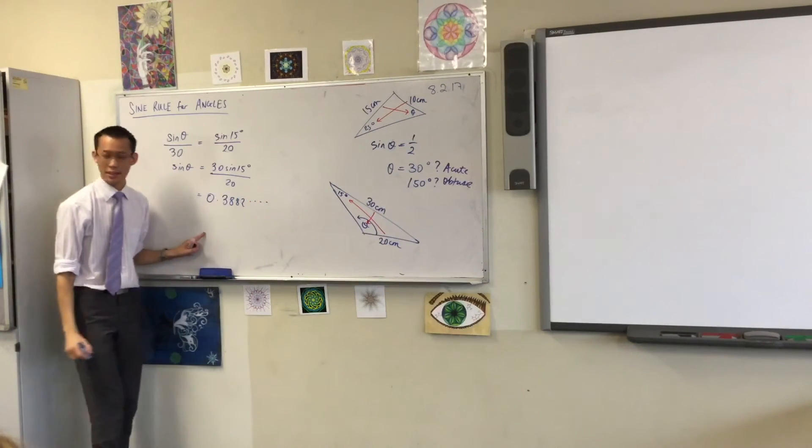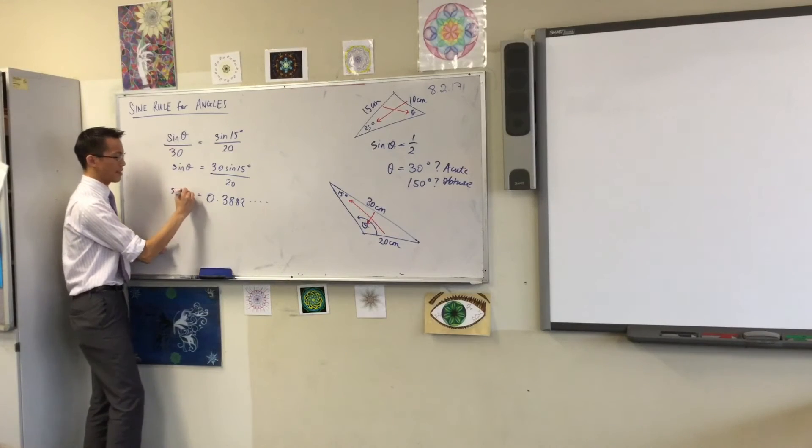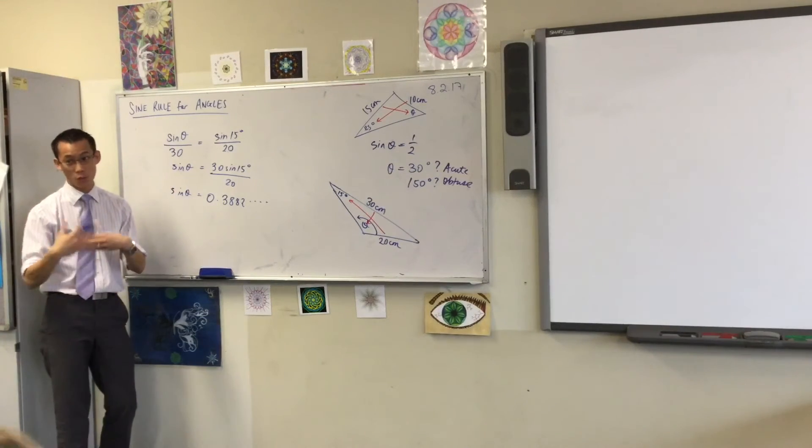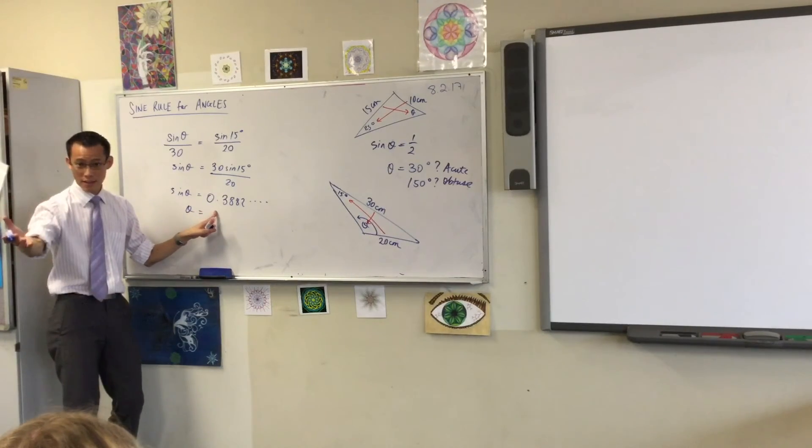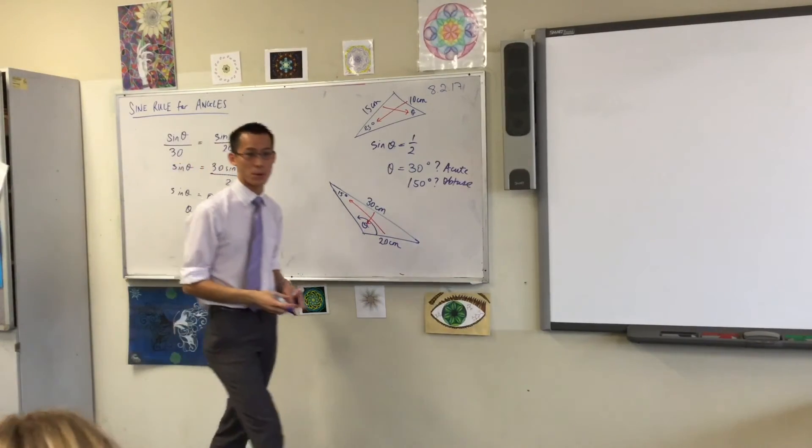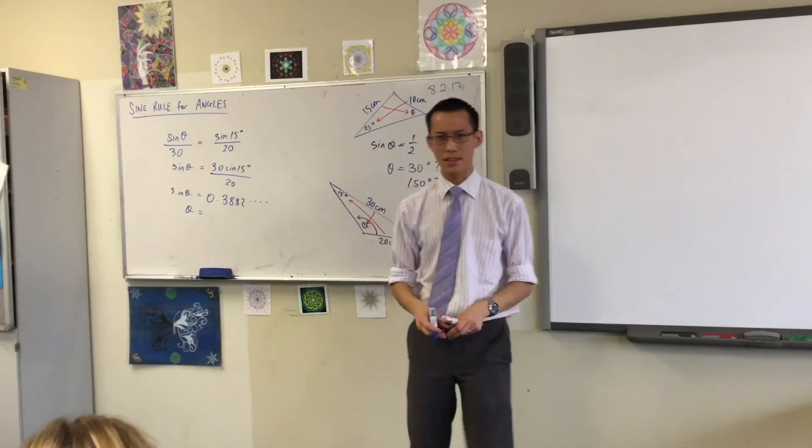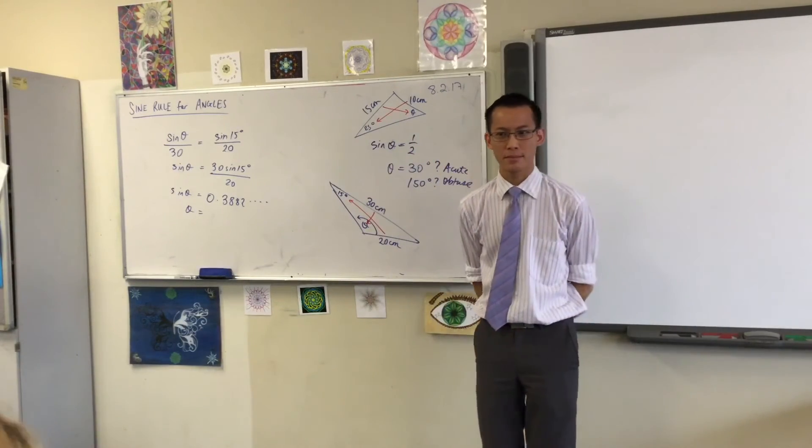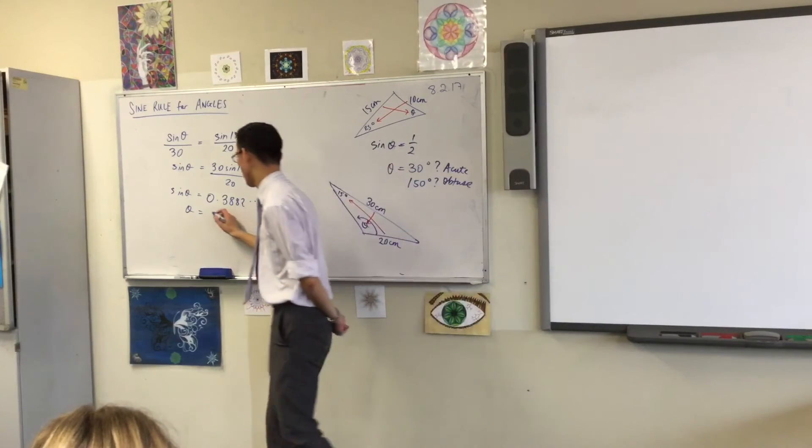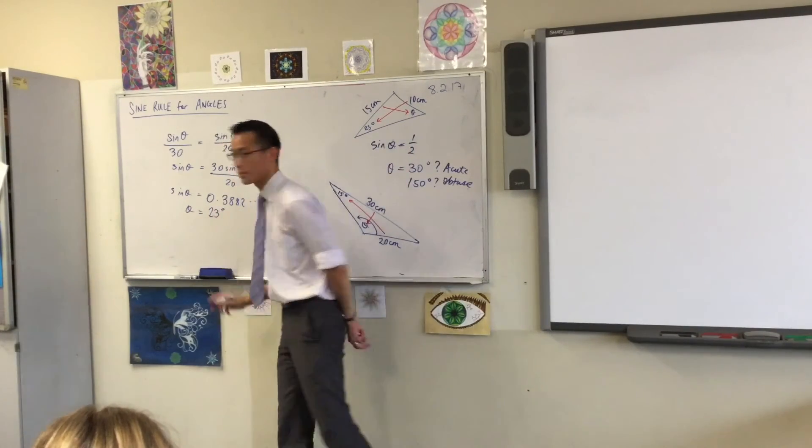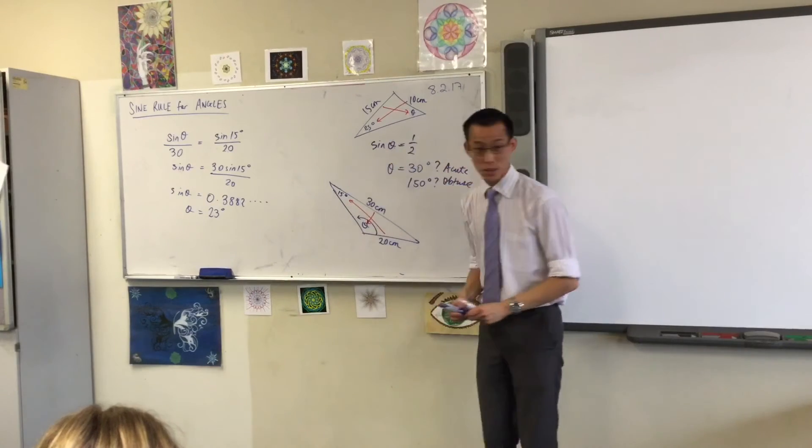So, that's what sine theta equals, but of course, we don't want sine theta. We want theta. So, you're going to go shift sine. Now, watch what kind of angle it provides to you. What's the size of the angle? Let's just get nearest degree. Anyone? 23. That's what the calculator tells you.